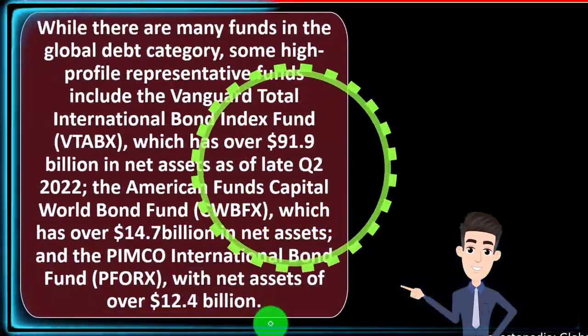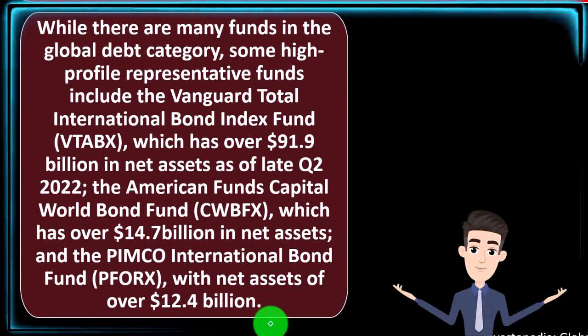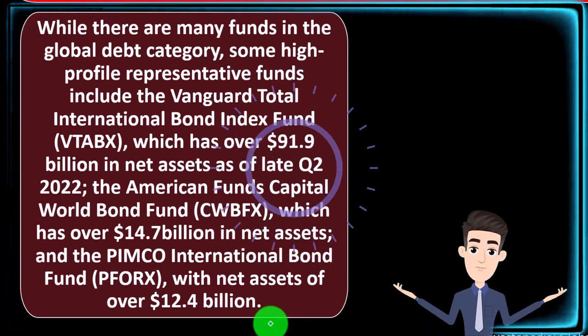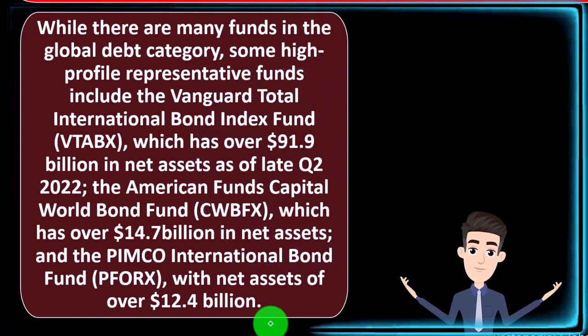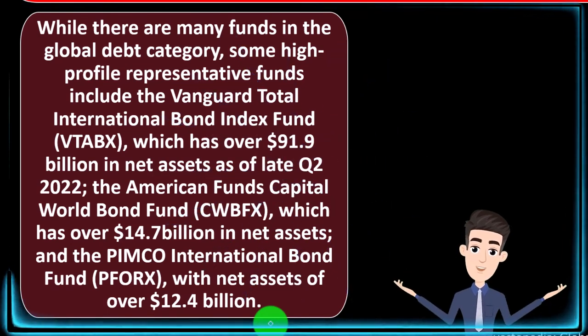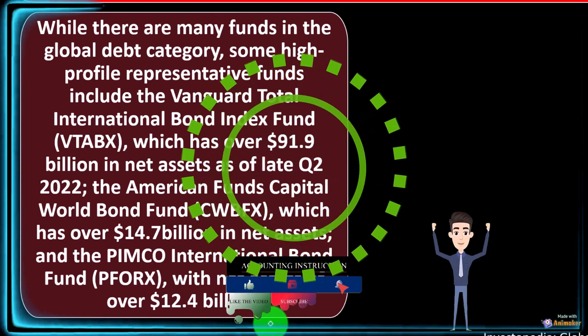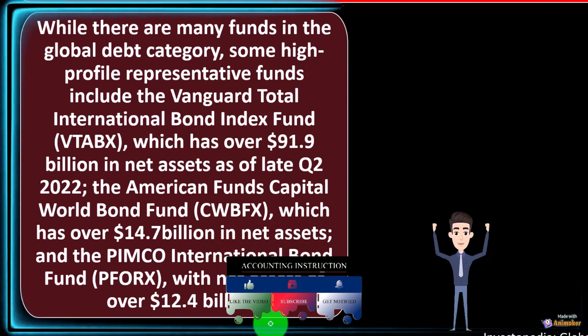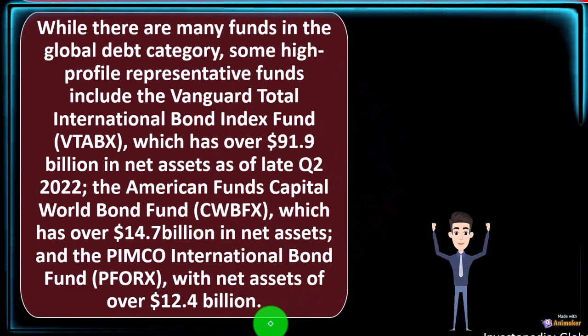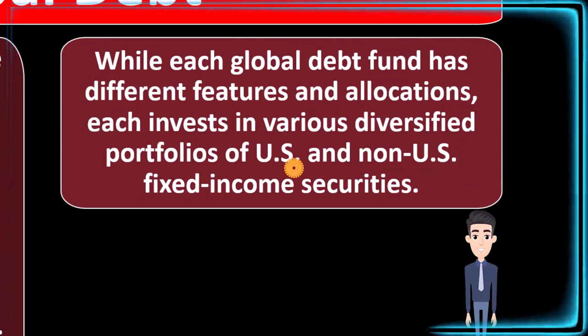Global debt: While there are many funds in the global debt category, some high-profile representative funds include the Vanguard Total International Bond Index Fund (VTABX), which has over $91.9 billion in net assets as of Q2 2022, the American Funds Capital World Bond Fund (CWBFX), which has over $14.7 billion in net assets, and the PIMCO International Bond Fund (PFORX) with net assets of $12.4 billion. While each global debt fund has different features and allocations, each invests in various diversified portfolios of U.S. and non-U.S. fixed income securities.